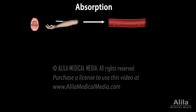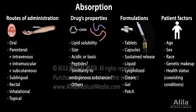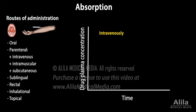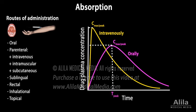Drug absorption varies depending on the route of administration, the drug's chemical properties, formulation, and patient factors. When a drug is given intravenously, it absorbs immediately, reaching maximum concentration in the blood plasma almost instantaneously. This is not the case with other routes of administration, in which the drug needs some time to get into the bloodstream and drug concentration in blood plasma increases gradually. The maximum, or peak plasma concentration, is reached when drug absorption rate equals clearance rate. Peak time, when peak concentration occurs, is an indicator of absorption rate — the faster the absorption, the sooner the peak time.